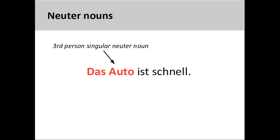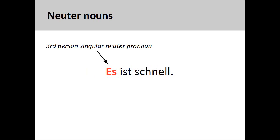And the neuter noun Auto in das Auto ist schnell — the car is fast — can be replaced by the third person singular neuter personal pronoun es, it. The main point is to pay close attention to the grammatical gender of the noun when replacing it with a pronoun. This can sometimes be tricky for native speakers of English.